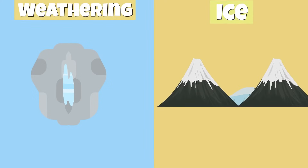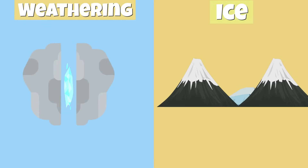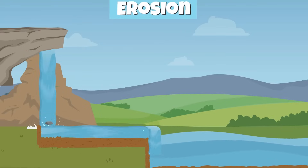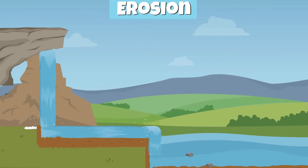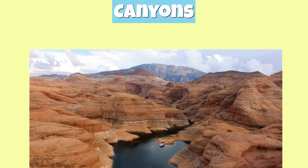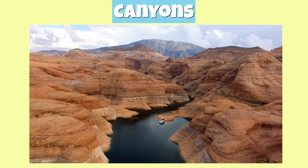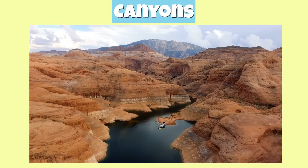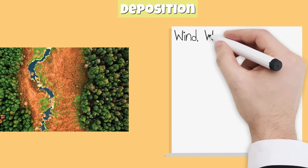Water found in rocks expands as it freezes and breaks down larger rocks into smaller sediments. Erosion is when these sediments are transported from one place to another. This usually is a slow process that takes place over time, such as when rivers move sediments from one place to another, causing the formation of canyons.